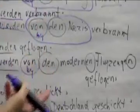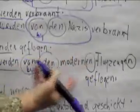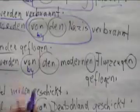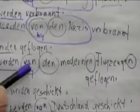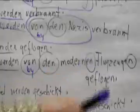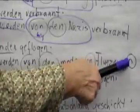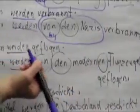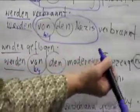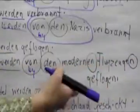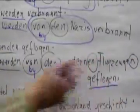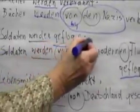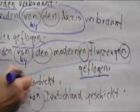Von den, and now we have an adjective — modernen. Remember, all the adjective endings in the dative are -en, whether it's singular or plural. And Flugzeuge as a noun needs to add an N because it's dative plural. So our whole phrase reads: von den modernen Flugzeugen, geflogen. Die Soldaten werden von den modernen Flugzeugen geflogen.